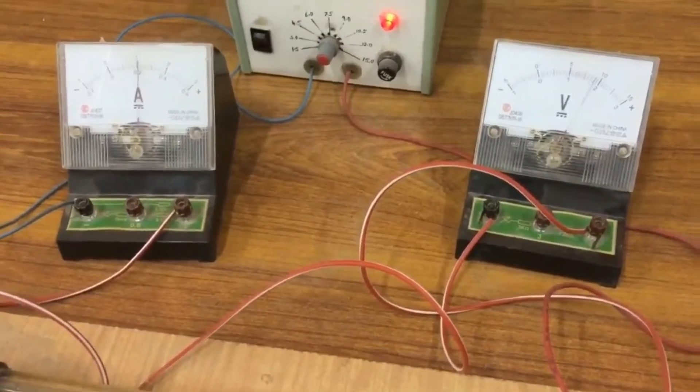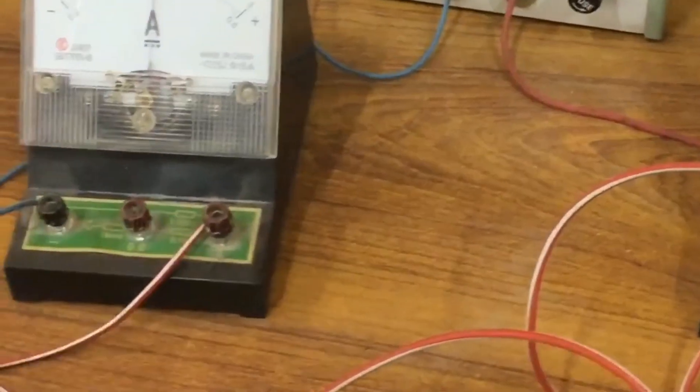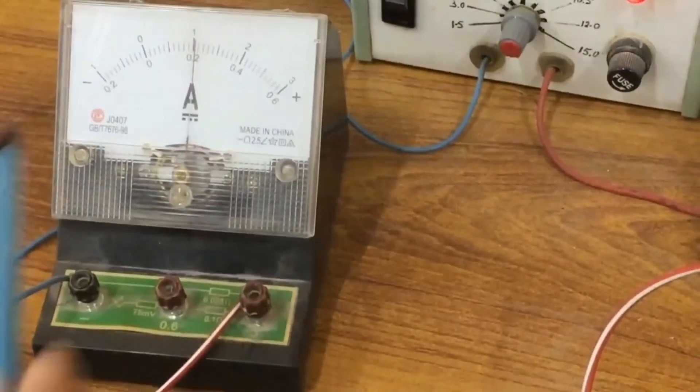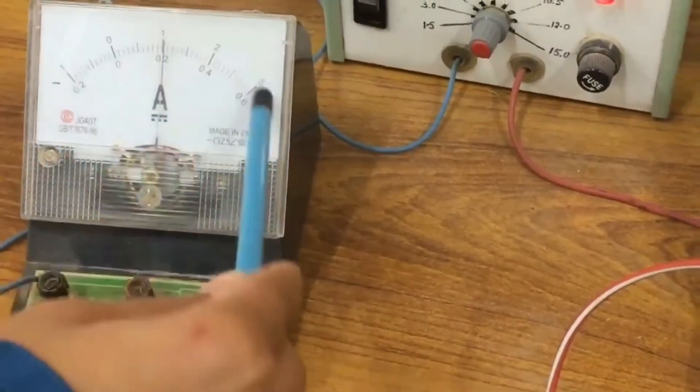The wire has been connected with the 3 amperes knob. So you have to read the scale which gives the maximum of 3 amperes, that means the upper scale.